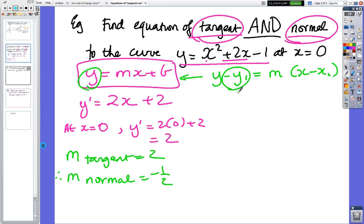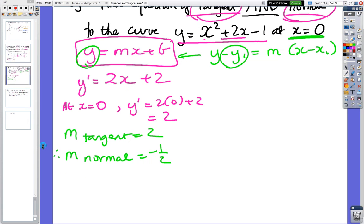But regardless, we have to have a y number to substitute in. And at the moment, I've got an x number, but I don't have a y. So what we're going to do is, at x equals 0, y equals the original formula, 0 squared plus 2 times 0 minus 1, so y equals minus 1. So what we're going to do is we'll do the tangent question first, and then we'll do the normal question second.